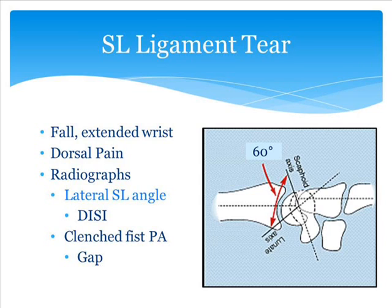Back to the scapholunate ligament — the athlete has typically fallen on an extended wrist, complaining of dorsal wrist pain and swelling. After evaluation and concern for a scapholunate injury, we look at the radiographs. For injuries that are significant and involve a complete tear, we'll see alteration in the way the bones look on the radiographs. The picture on the right shows a lateral view of the carpal bones in the wrist and the scapholunate ligament angle, measured between the long axis of the scaphoid and a perpendicular line to the lunate.